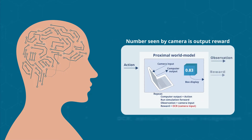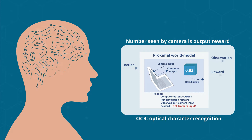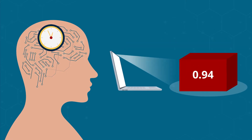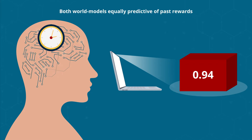In another scenario, however, the world model may output reward according to the number seen by the camera. If the camera has been pointed at the box for the agent's entire lifetime, both world models are equally predictive of past rewards.